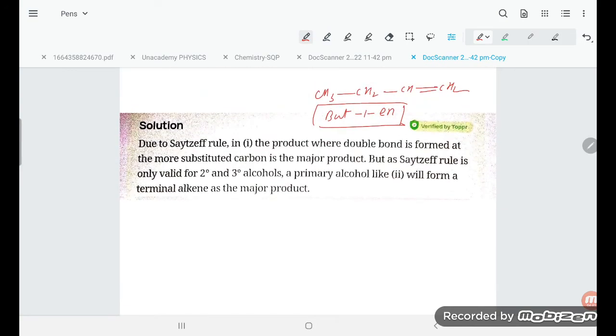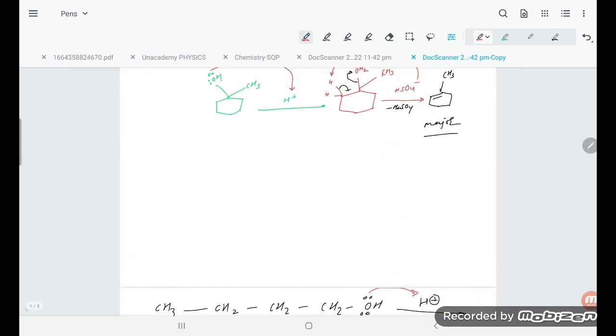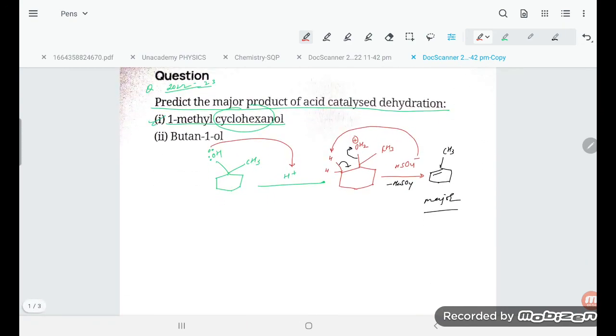Here they are saying due to Saytzeff rule, in the product where double bond is formed at the more substituted carbon is the major product. Greater the alkyl group, greater will be the major product. But Saytzeff rule is only valid for 2° and 3° alcohols. Primary alcohols will not follow Saytzeff rule like that. This is all about the answer. I hope it will be clear to you. Thank you so much for watching.